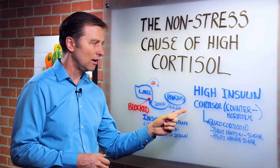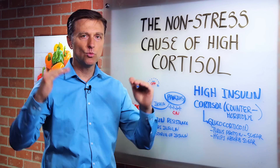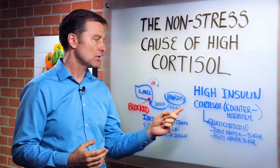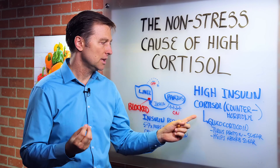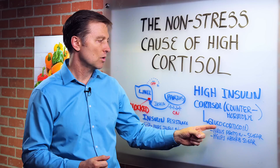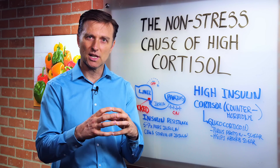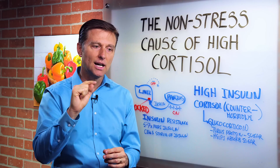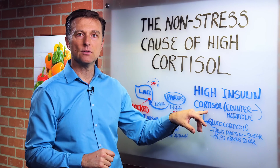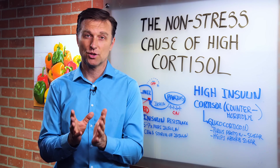Cortisol is the counter hormone to insulin. They work opposing each other in a very interesting way. The name of cortisol, which is the adrenal hormone, is glucocorticoids — 'gluco' meaning sugar or glucose, and 'corticoid' meaning the cortex or the outer part of the adrenal. There's an inside and outside of the adrenal; on the outside, cortisol is made. One of the functions of cortisol is to control blood sugars in a certain way.